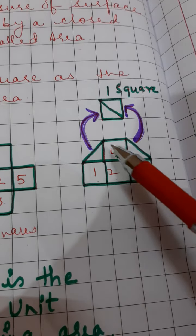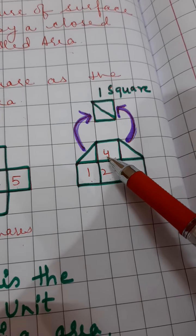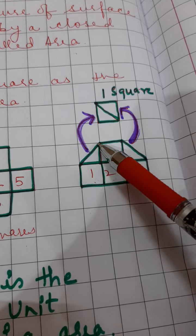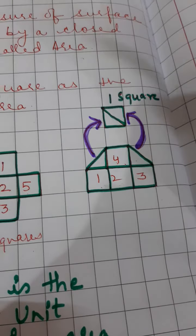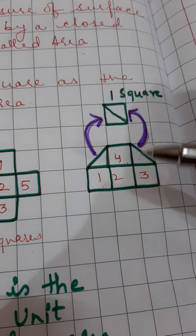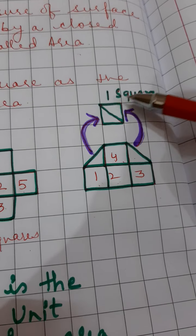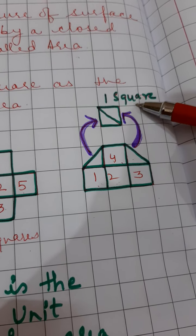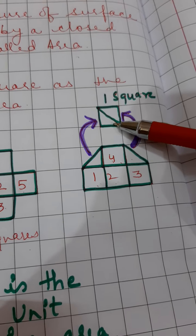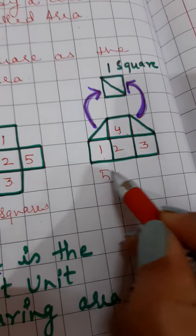Here in this figure, there are 1, 2, 3, 4 squares. But these two are half — you can see that this is half of the square, and this is also half of the square. Half plus half makes 1 square. So the area of this figure will be 1, 2, 3, 4, and 5 — equal to 5 squares.